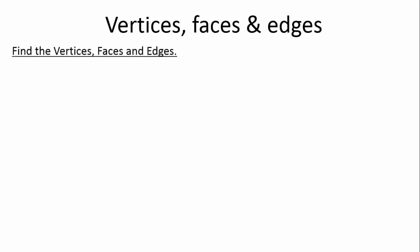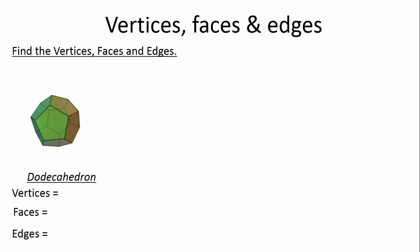Now let's find the vertices, faces, and edges of a dodecahedron. Remember Euler's Formula: faces plus vertices minus edges equals two. Counting vertices: five on the top ring, five on the bottom ring — that's ten — plus ten more around the middle gives twenty vertices. Counting faces: the front one, the back one, and ten more around — twelve faces total. Counting edges: five on top, five on the bottom — that's ten — plus twenty more going around gives thirty edges.